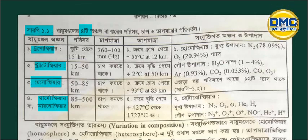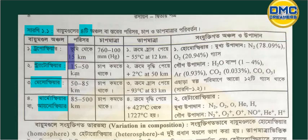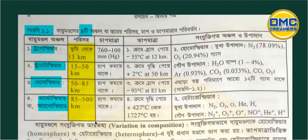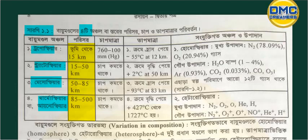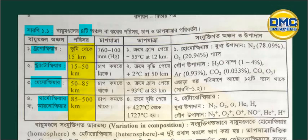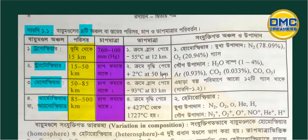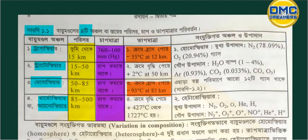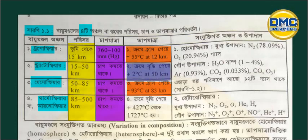Now we have to look at the thermosphere. There are layers between 35 and 75 km. So we are going to revise this lecture. There is the thermosphere, and these are very small layers. Of these, 1 and 3 have a positive lapse rate, and the rest — 2 and 4 — have a negative lapse rate.